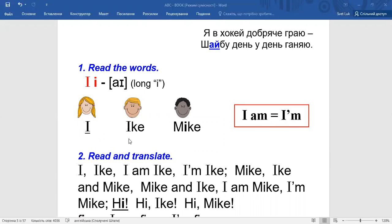Great! Now let's look. What is this boy's name? Listen to me and repeat. Ike. Great! What is this boy's name? Mike. Mike. Repeat, please.